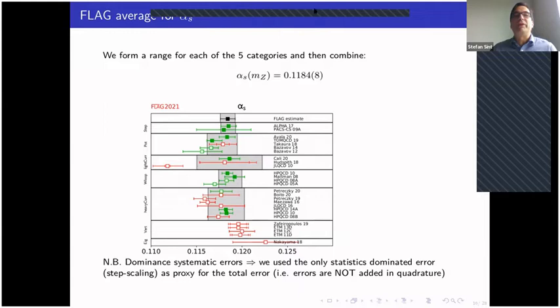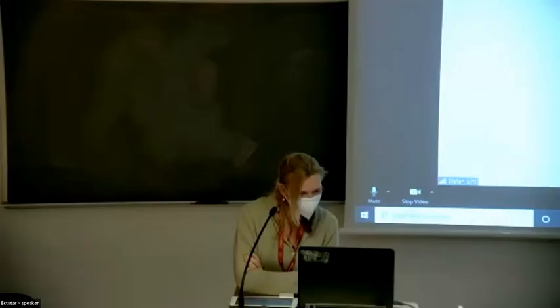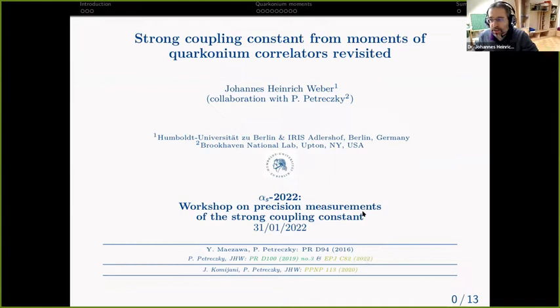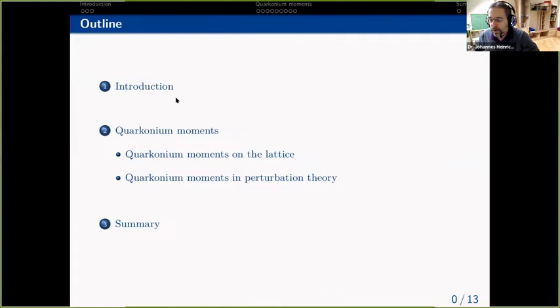The next talk is by Johannes Weber, who thanks the organizers for the opportunity to present work done together with Peter Petreczky, published in 2019 for the first analysis and re-analyzed just one week ago, now appearing in EPJC. He will discuss charmonium moments and alpha_s extraction, briefly introducing the topic and then discussing technical details.